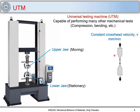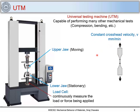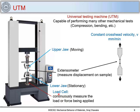The material is deformed under a constant crosshead velocity, measured in millimeters per minute. The load on the sample is measured using a load cell, while the deformation is measured using an extensometer, which measures displacement on the sample. This extensometer is placed between the two gauge points.